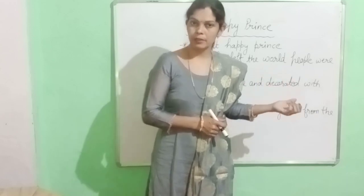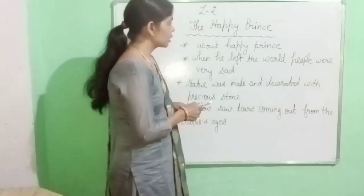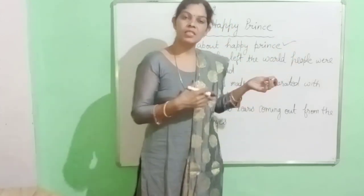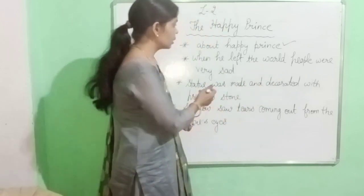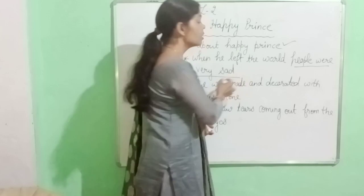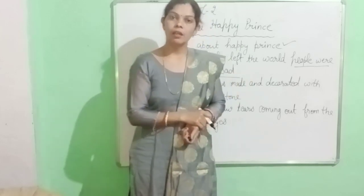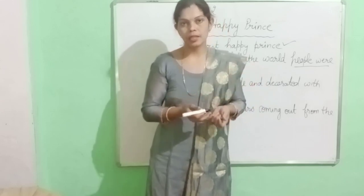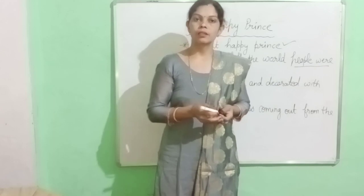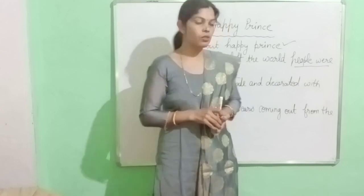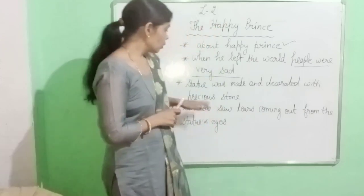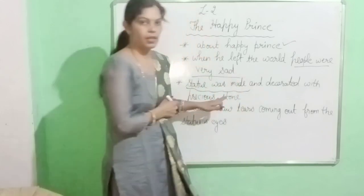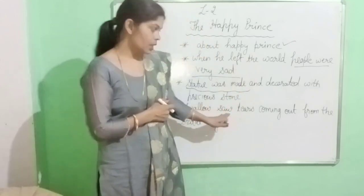This is the story about a happy prince. Kya story kis ke baare mein hai? Happy prince ke baare mein hai. Or jab prince ki death ho jati hai, prince mar jata hai, to people kya ho jatai hai? Buhut hi jyada sad ho jatai hai. Kyunki joh happy prince tha, woh hamesha people ki help karta tha. That's why people were very sad after his death. Us ke baad jab us ki death hoti hai, toh us ka statue bana jata hai.